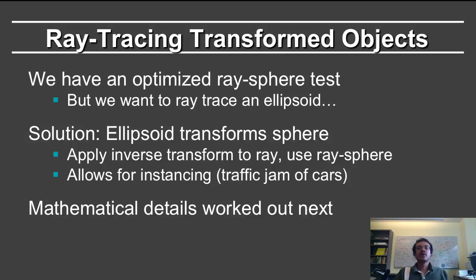One final aspect of ray tracing and ray surface intersections is intersecting with a transformed object. So consider a common situation where you have an optimized nice ray sphere intersection test in homework 3. But you want to trace the ray to intersect with an ellipsoid. Because I took my sphere and I scaled it and squashed it and stretched it so it's now an ellipsoid.